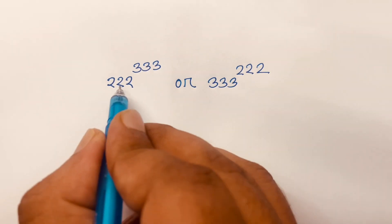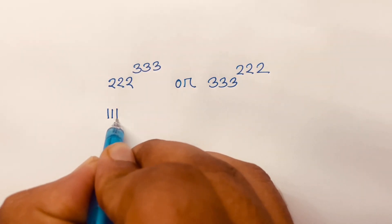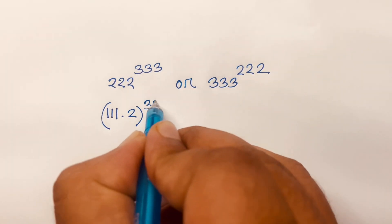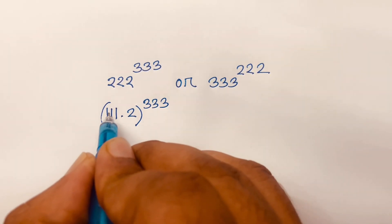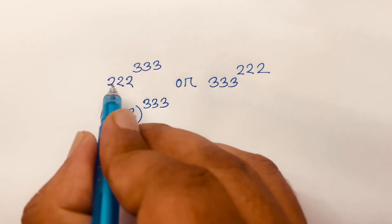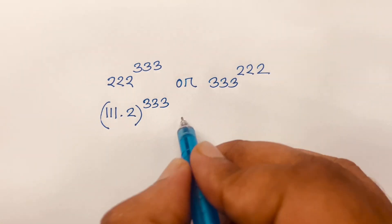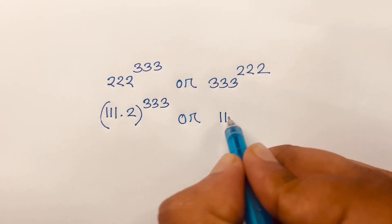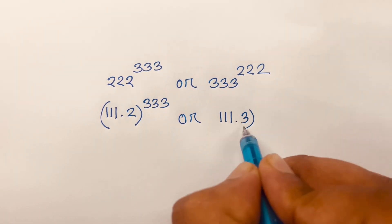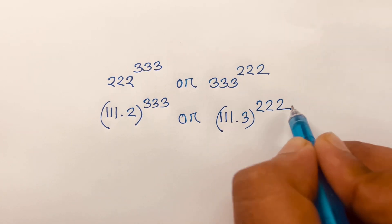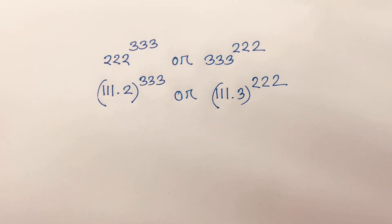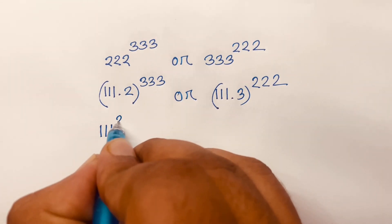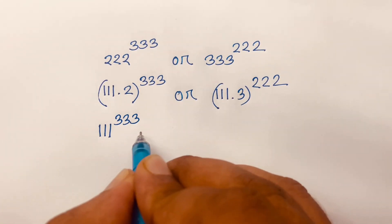First, I can say 222 equals 111 times 2, so 222^333 becomes (111×2)^333. Similarly, 333 equals 111 times 3, so 333^222 becomes (111×3)^222.